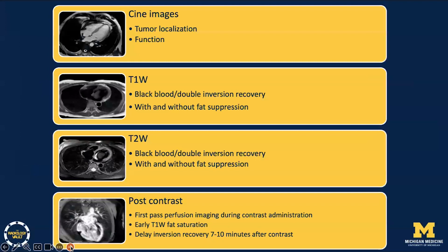How do we image cardiac masses? First, CINE images are obtained for tumor localization and to assess whether the mass has any effect on cardiac function. Next, T1 and T2-weighted imaging using a black blood double inversion recovery are obtained with or without fat suppression. Finally, contrast is given with first-pass perfusion imaging during contrast administration, followed by early T1 fat saturation and delayed inversion recovery imaging to assess for enhancement.